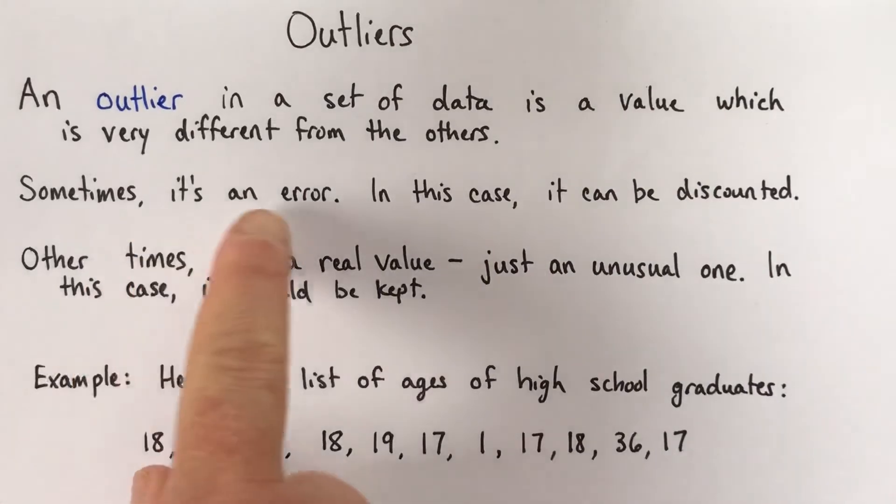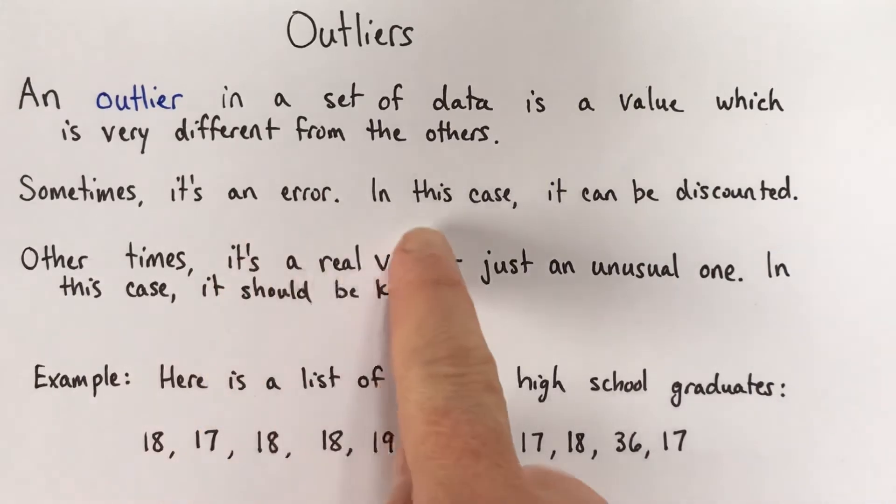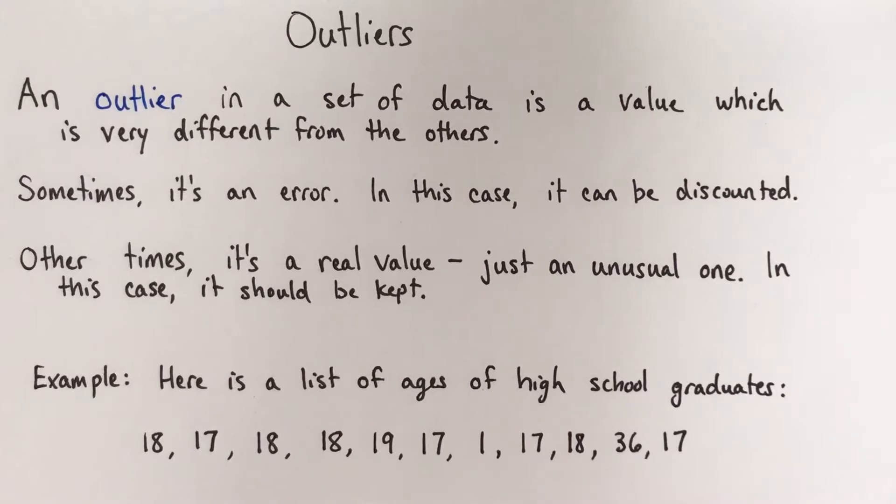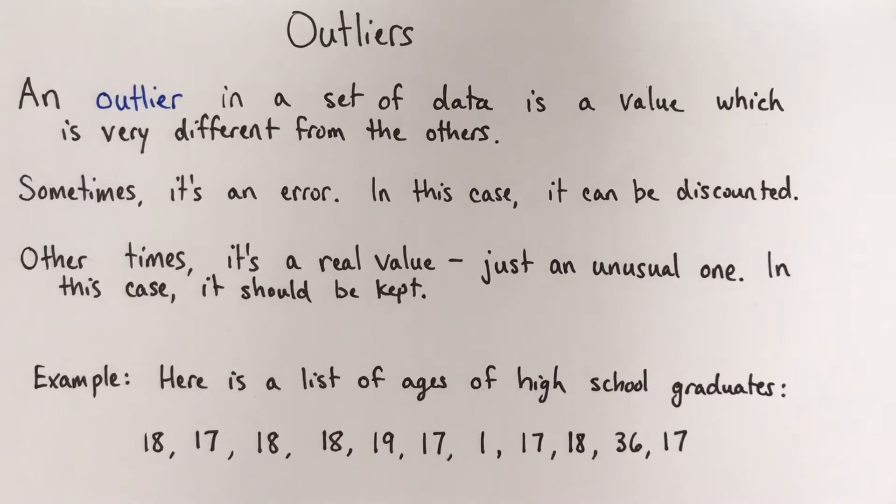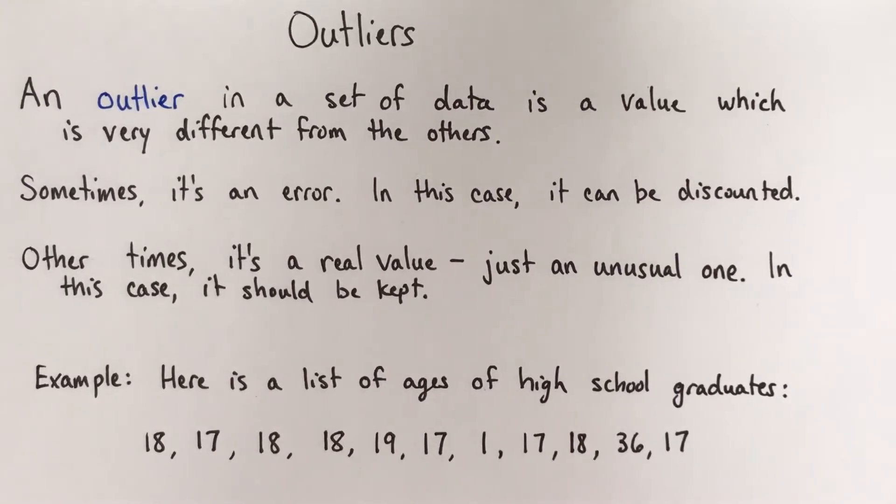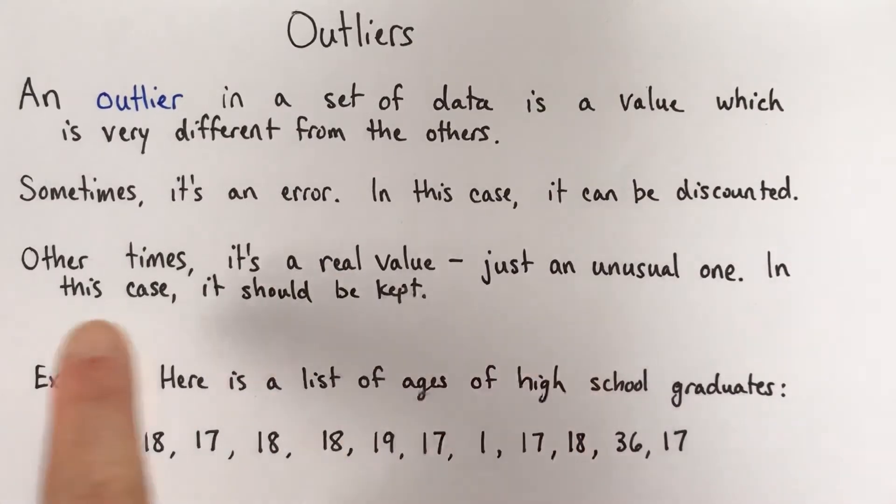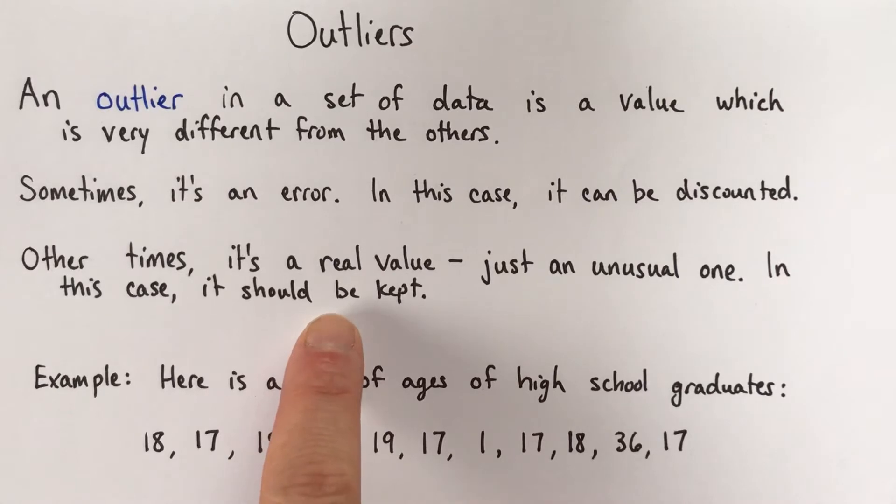Sometimes the outlier could be just a mistake, and if it's a mistake, then we don't include it when we're doing calculations, like for example if we're finding the mean or the median. But other times the outlier is a real value, it's just an unusual one, and in this case we should not get rid of it, we should absolutely keep it.